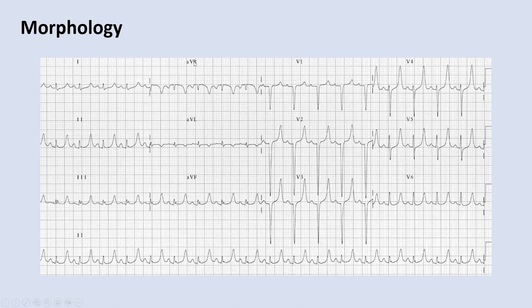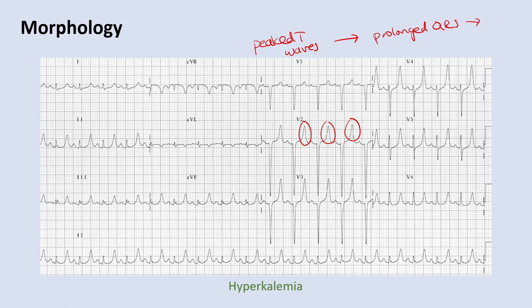This EKG shows really peaked T waves, which is a sign of hyperkalemia. As hyperkalemia worsens, you'll start to get a prolonged QRS, and eventually it turns into a sine wave pattern. At that point, you're too far gone — potassium should have been treated much earlier. Make sure you know about peaked T waves as the early sign of hyperkalemia.